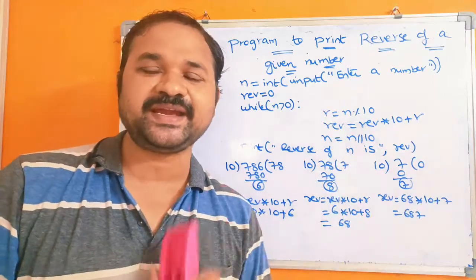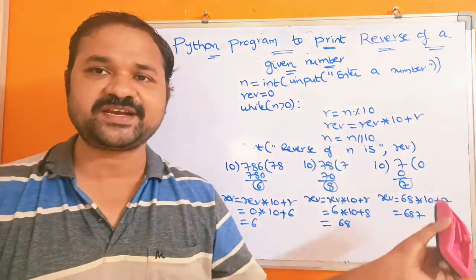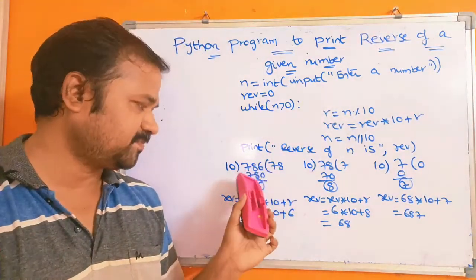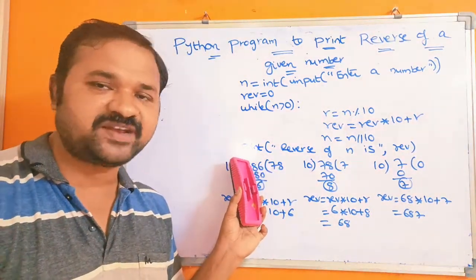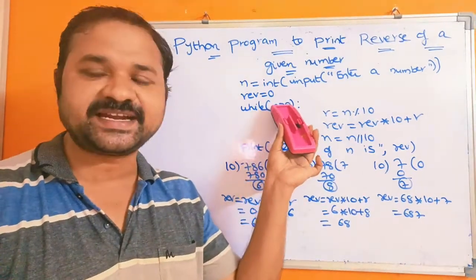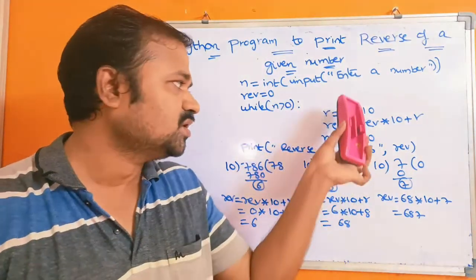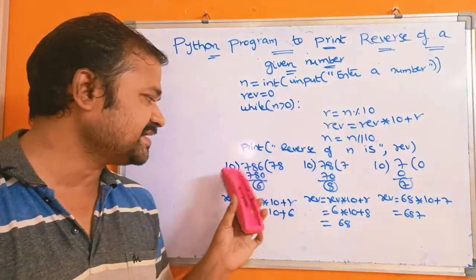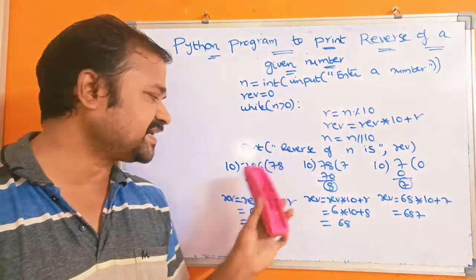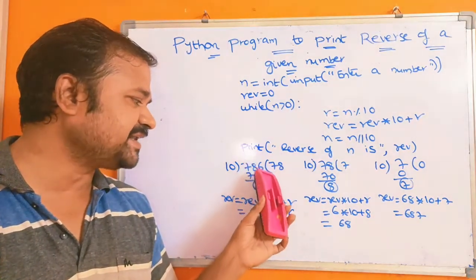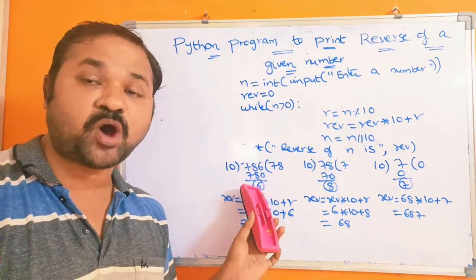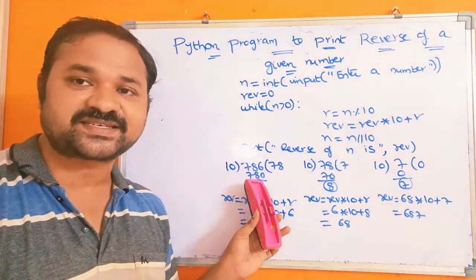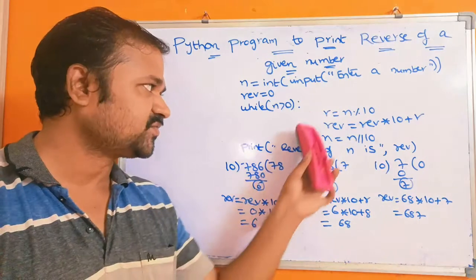Now let us verify this logic manually, and after that we will execute the program on a computer. Let the number be 786. 786 is greater than 0, so the condition is true and the loop body executes. First we calculate the remainder: 786 modulo 10. 10 times 78 is 780, and 786 minus 780 is 6. So the remainder value r is 6.